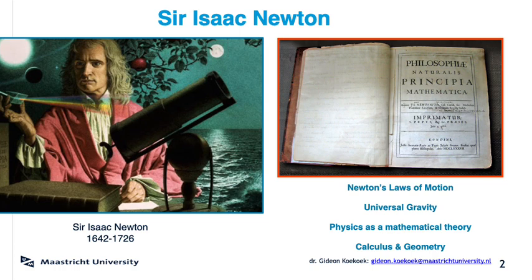Isaac Newton famously published his Principia Mathematica in 1687, a book in which he showed how you can understand motion by what we now call Newton's laws. In the Principia, he also derived a formula for universal gravity and did so by a blend of geometry and calculus. And, somewhat unappreciated, he also hammered home the notion that nature can be understood by mathematics. His book truly was a great revolution in scientific thinking.